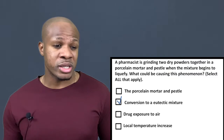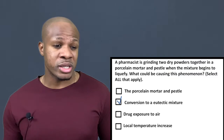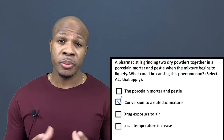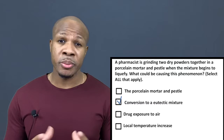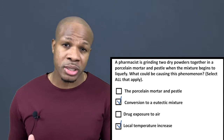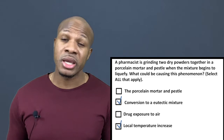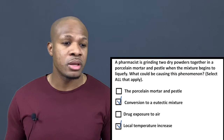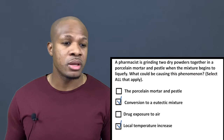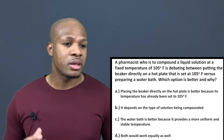Looking at the other answer choices: the porcelain mortar and pestle itself wouldn't cause melting — only a change in the mixture's chemical properties or an increase in temperature can cause a solid to melt. The last option mentions a local temperature increase, and yes — when you grind two powders together you add energy, creating friction, which raises the temperature inside the mortar and pestle. So both conversion to a eutectic mixture and local temperature increase are correct.